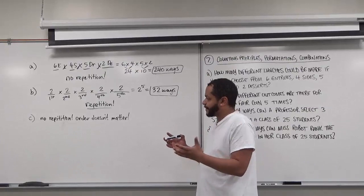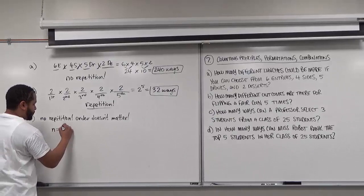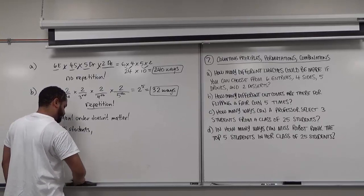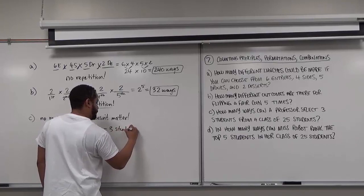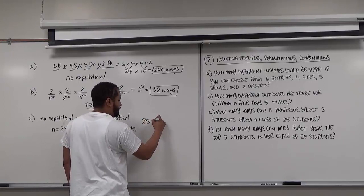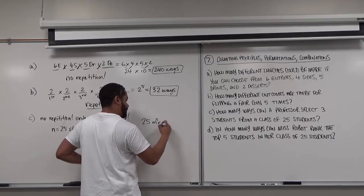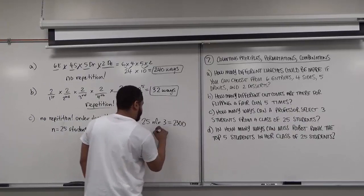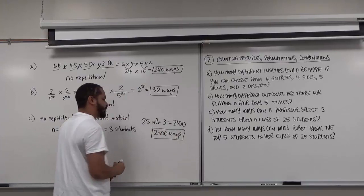Our N is 25 students and our R is 3 selections. To do this with your calculator, push 25, then the NCR button, then 3, and press enter. It should give you 2,300 different ways. So how many ways can a professor select 3 students out of a class of 25? That would be 2,300 different ways.